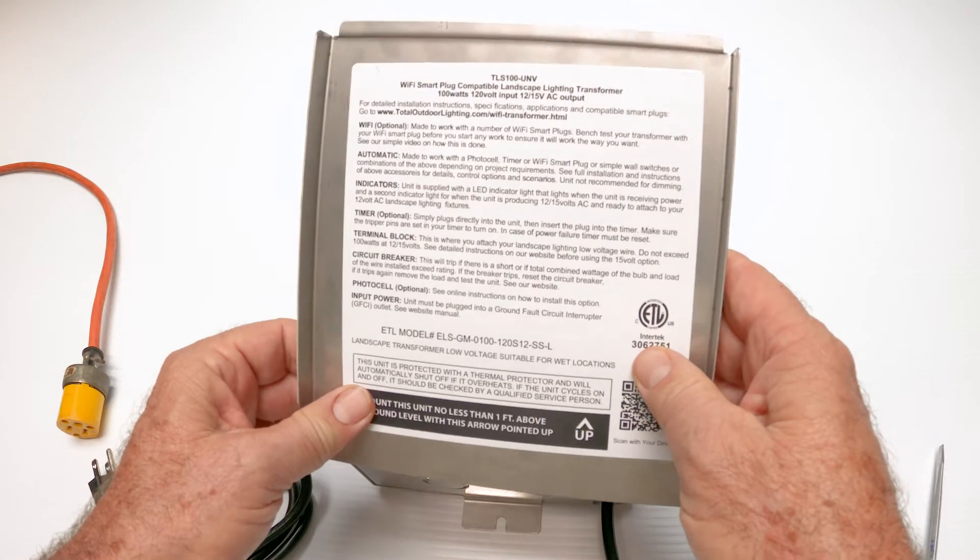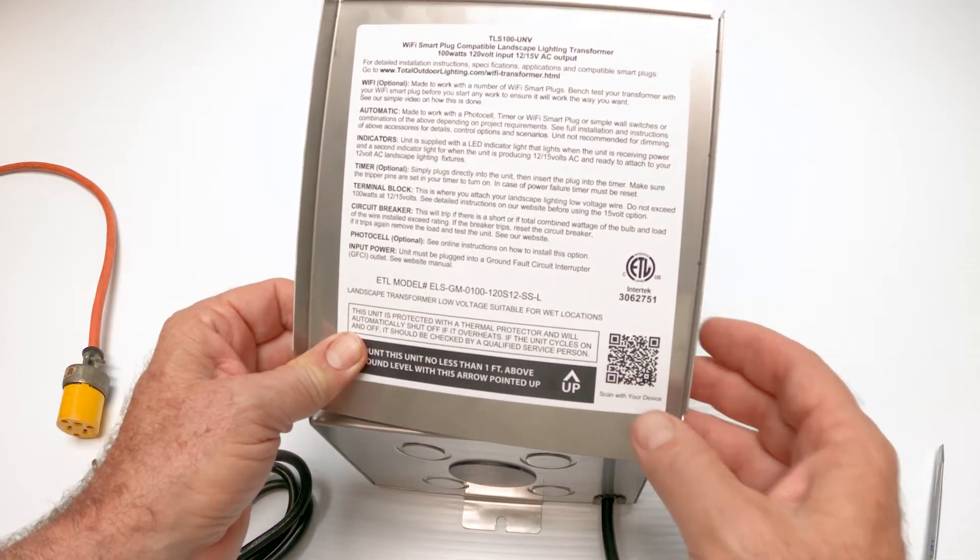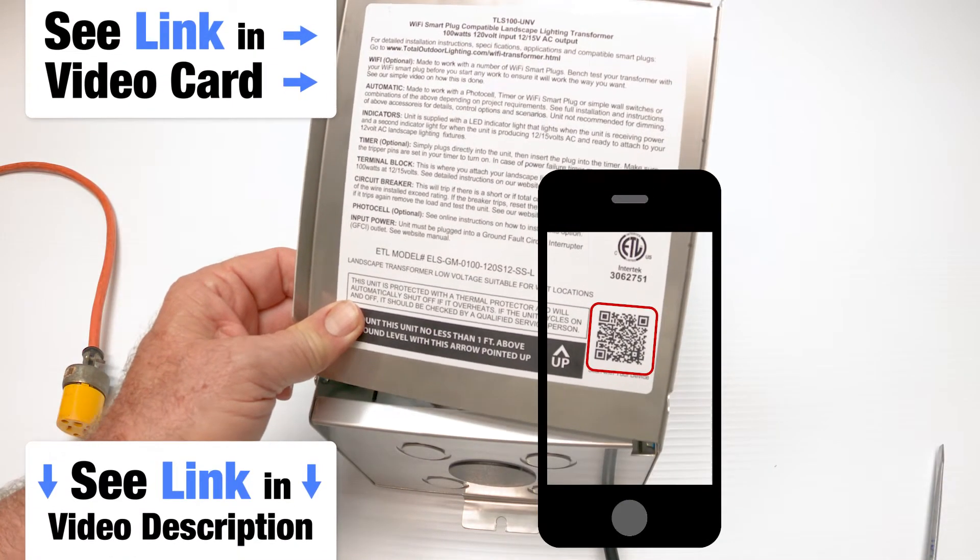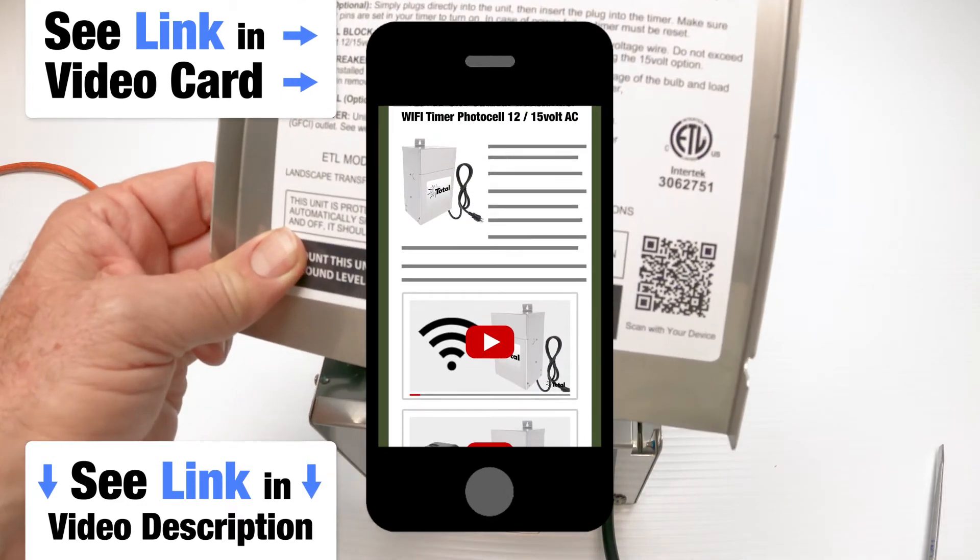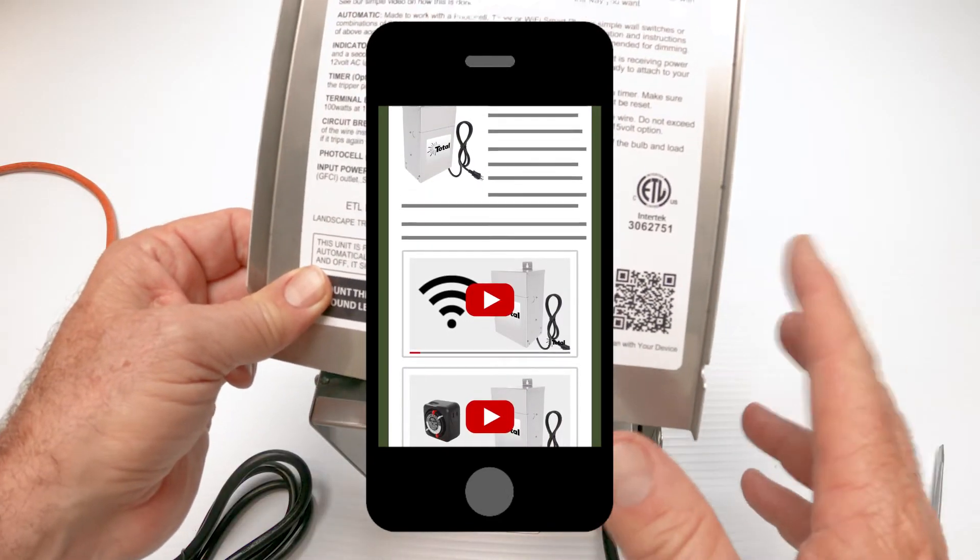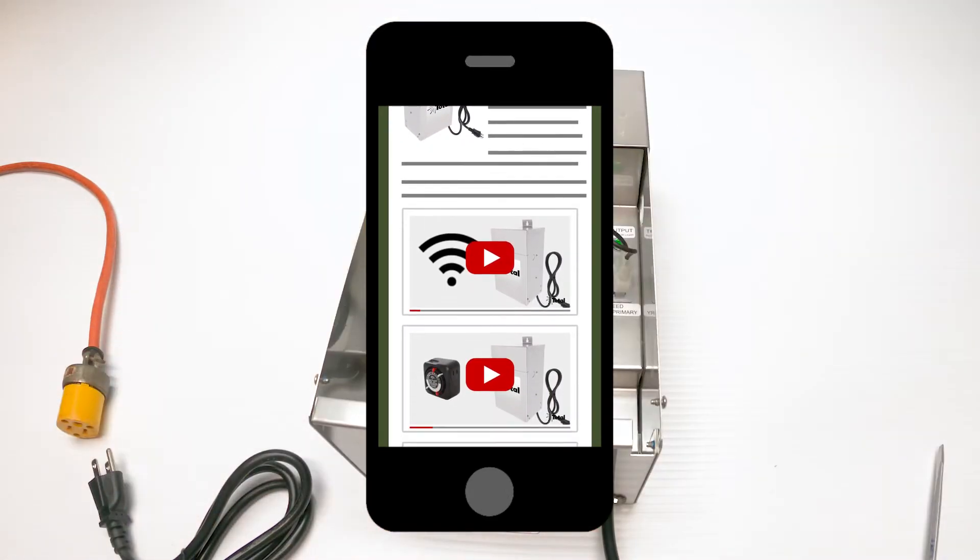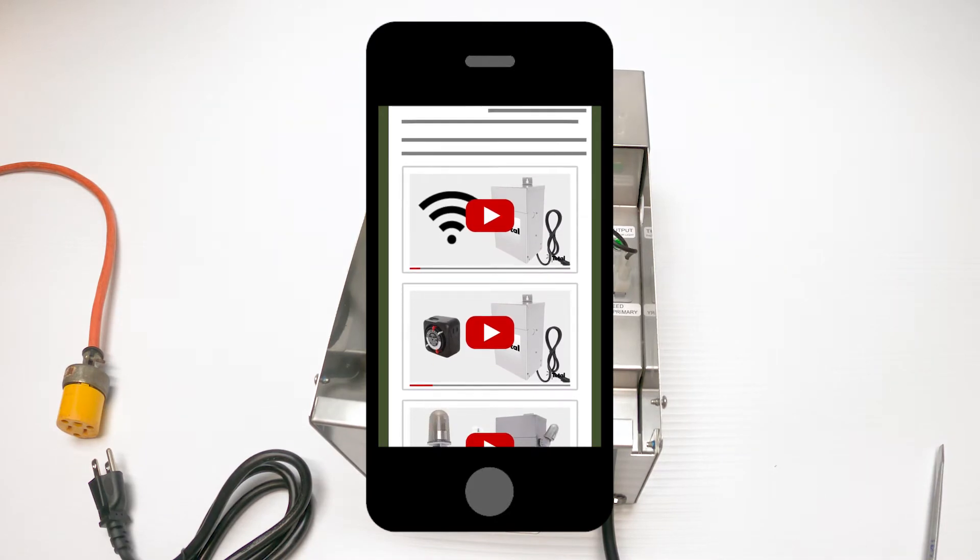Inside the cover you'll find some instructions as well as a QR code that takes you to our website which is constantly updated with all kinds of really cool information on troubleshooting, landscape lighting, videos and projects, pretty much everything you want.